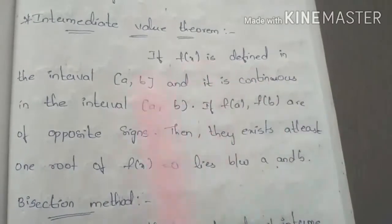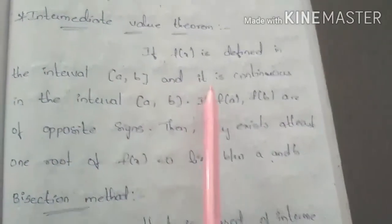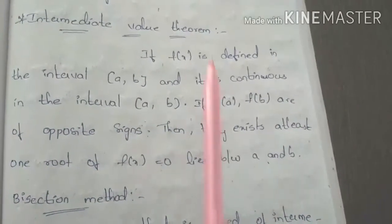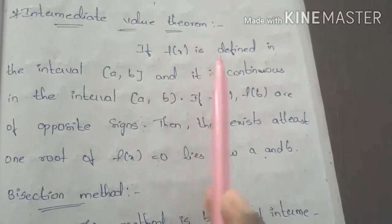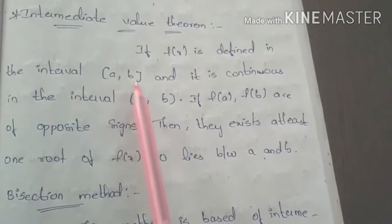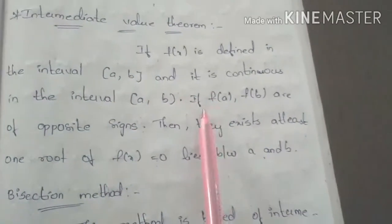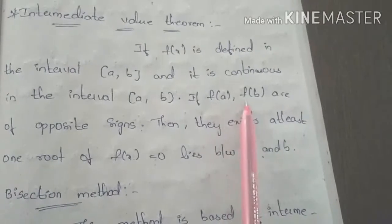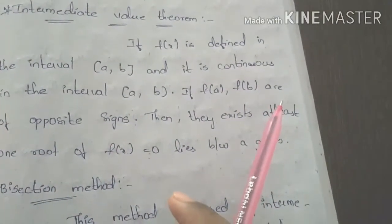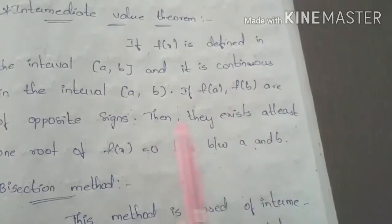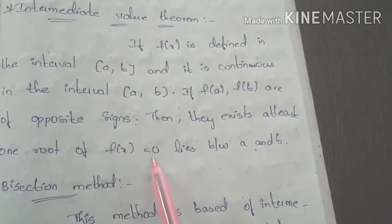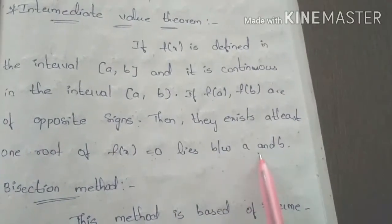If f of x is defined on an interval [a, b] and it is continuous on the interval [a, b], and if f of a and f of b are of opposite sign, then there exists at least one root of f of x equals zero that lies between a and b.